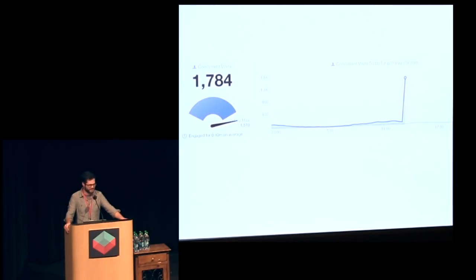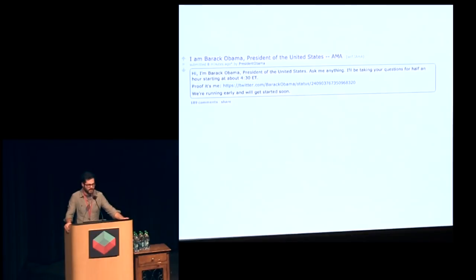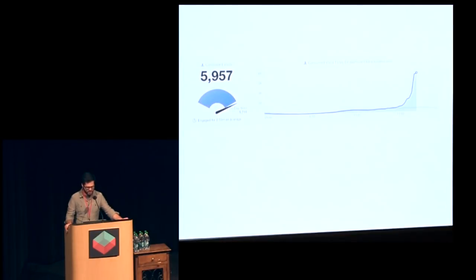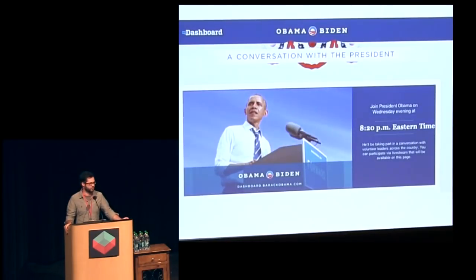Every so often we'd see one of these spikes, and you might wonder what creates a spike like that. This is just on gottaregister.com — a very specific voter registration page, not the main site. That happened when Barack Obama did an AMA on Reddit. And of course everything turns into a fundraising opportunity, so we also had that page. Here's another one — this is for Dashboard. We hit almost 6,000 concurrent visits. What causes that? That's when the president does a live video streamed through your website.